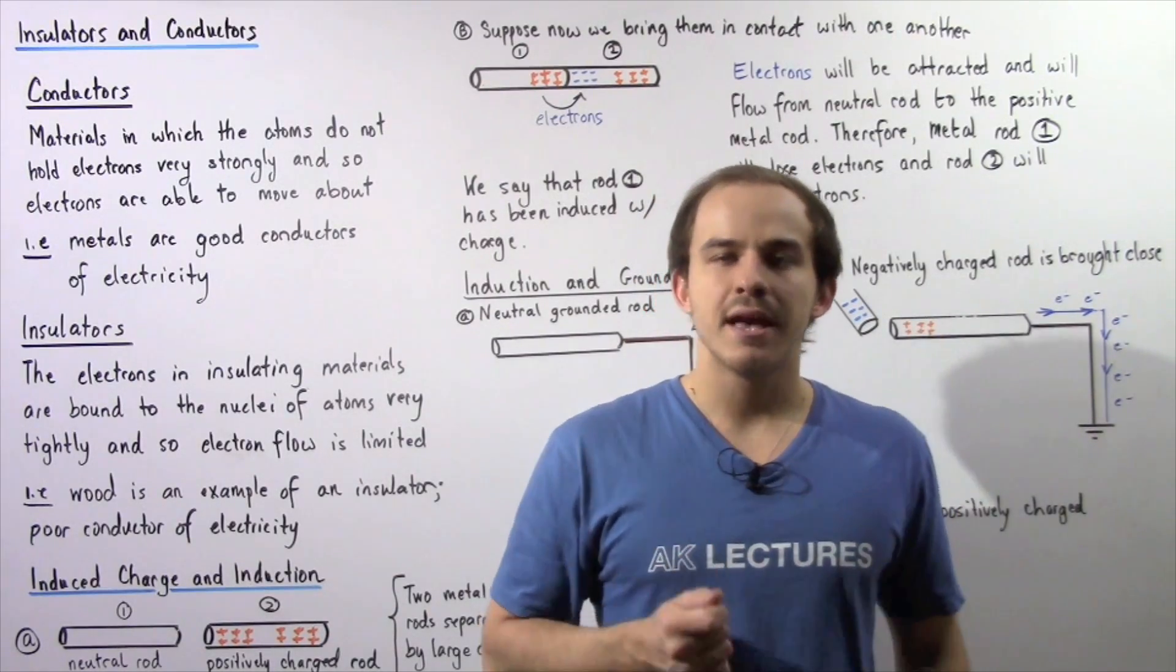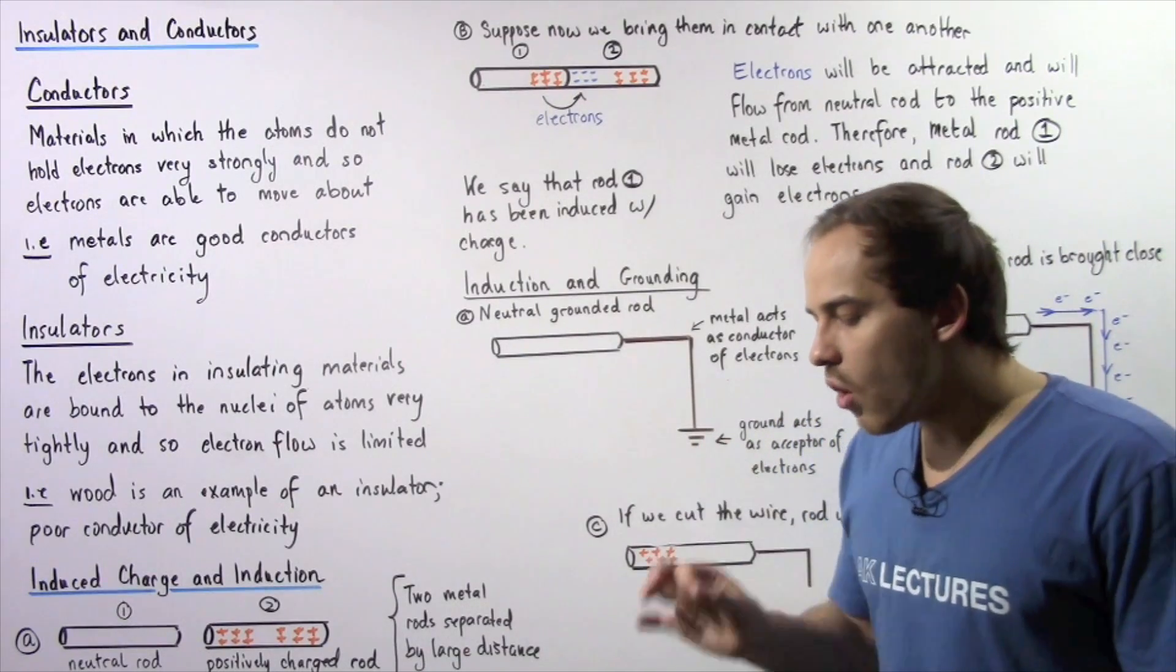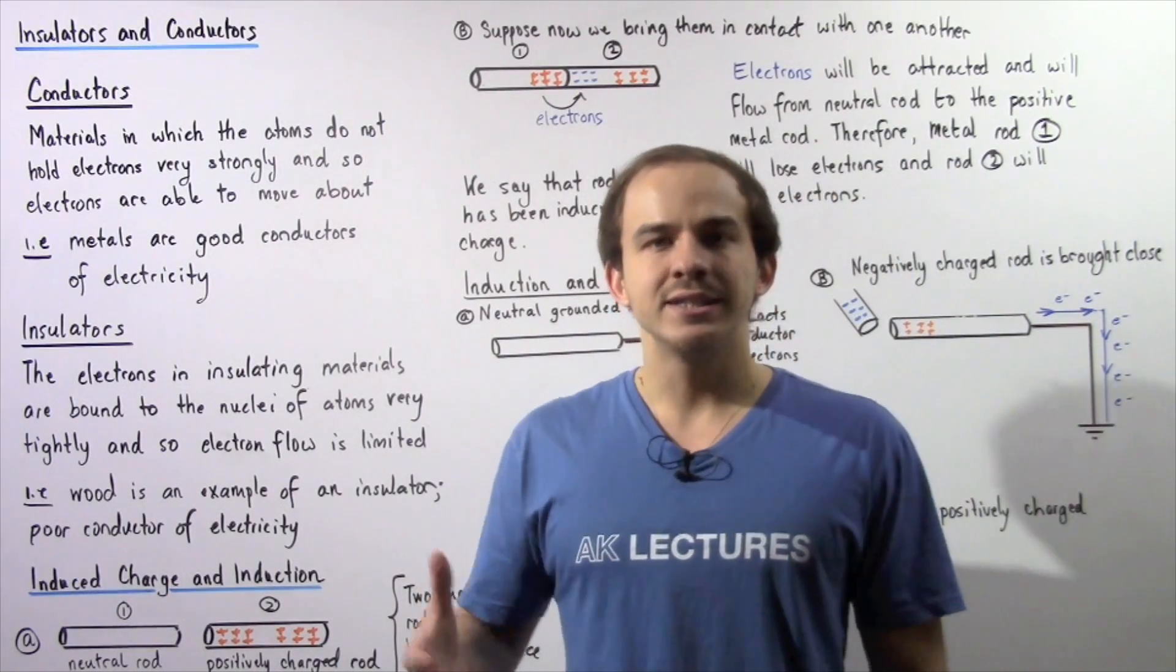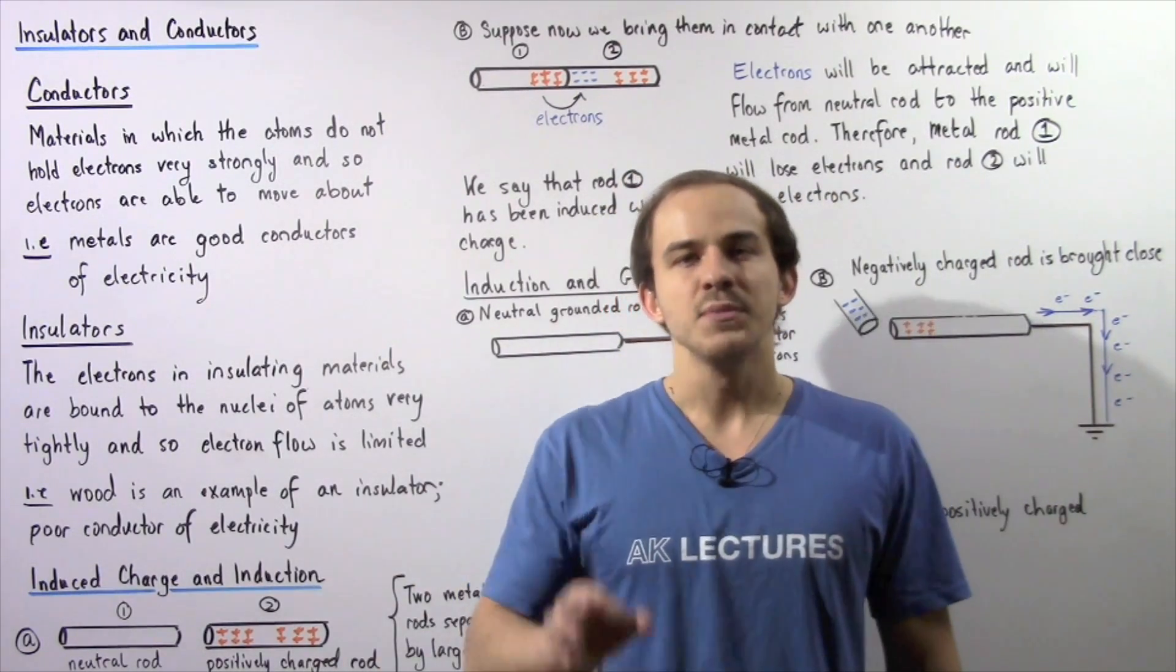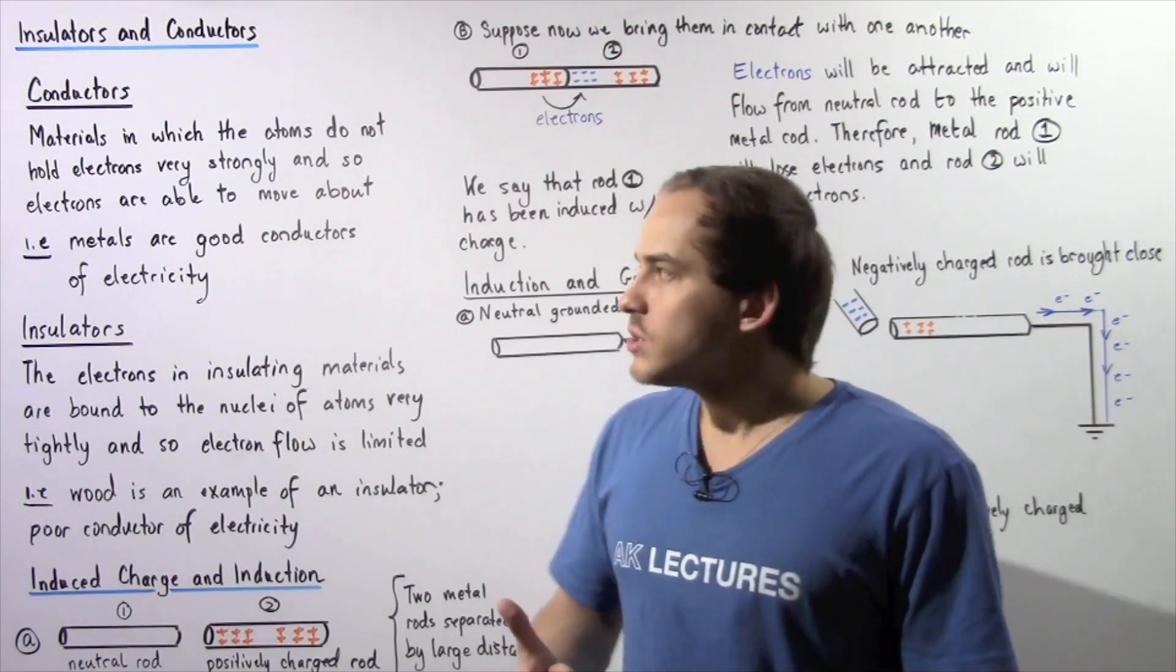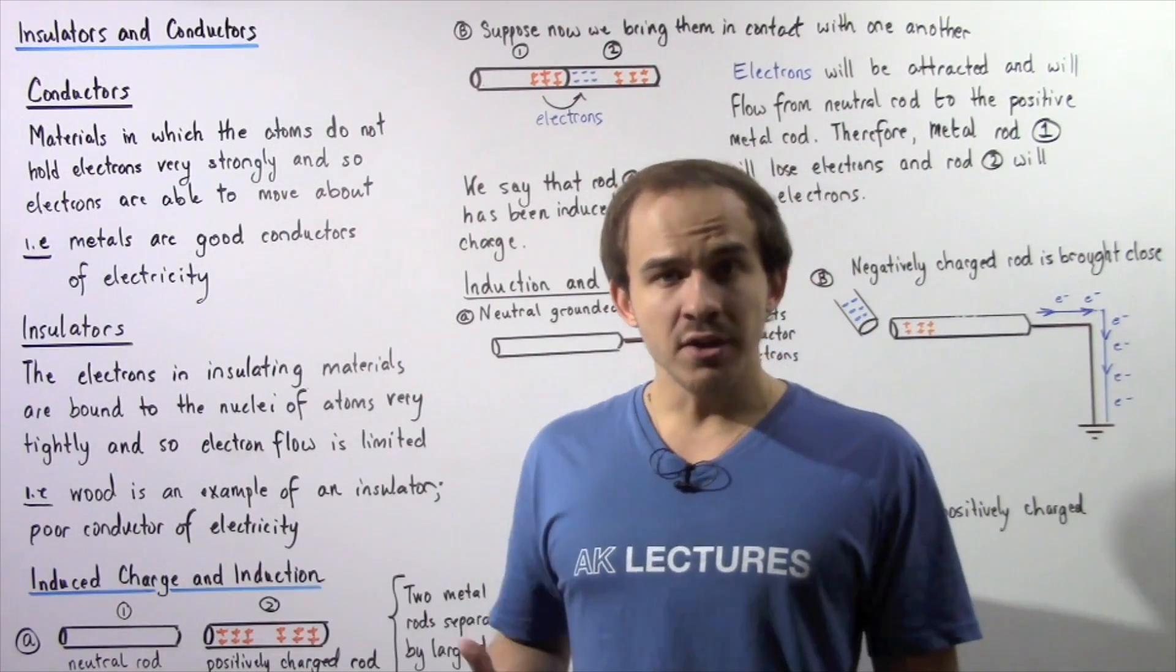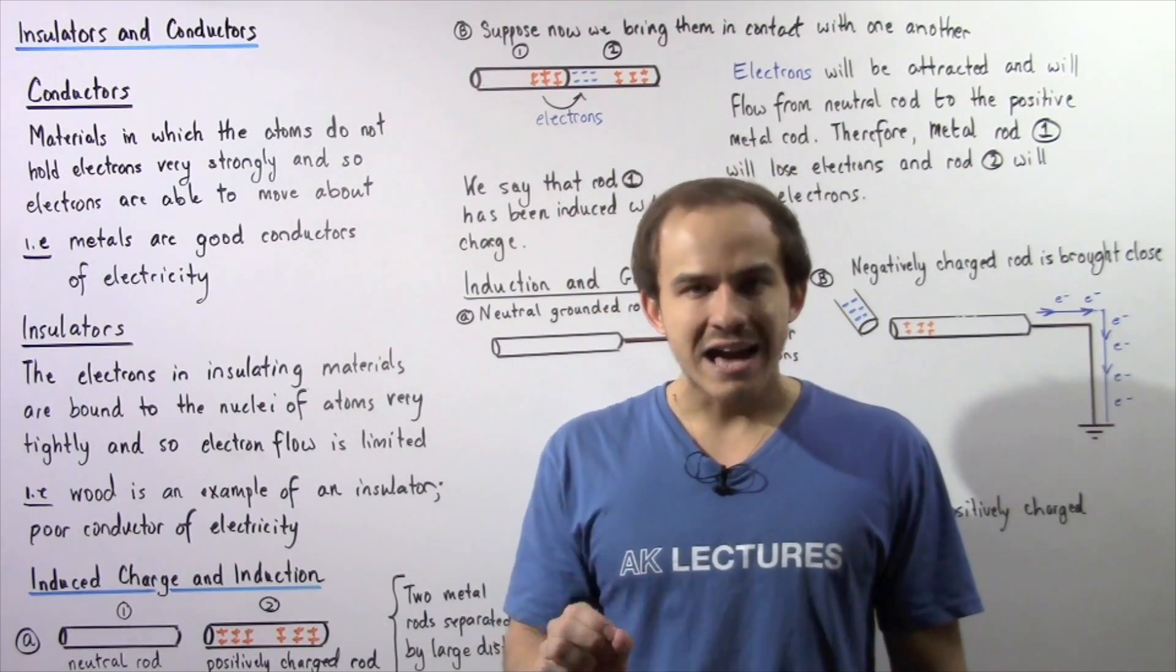Electricity is essentially a concept that deals with the movement of electrons. We call a certain object a good conductor of electricity if that object allows the movement of electrons. So we can essentially categorize objects or materials into two different categories.